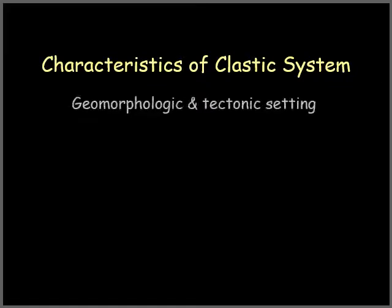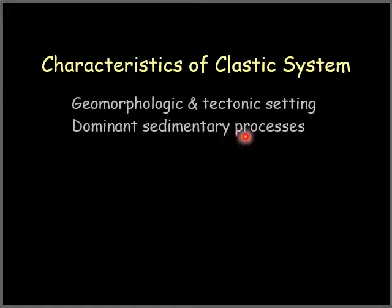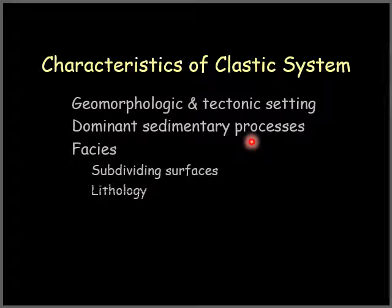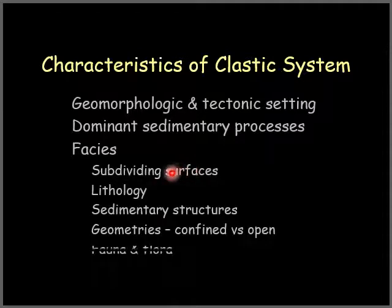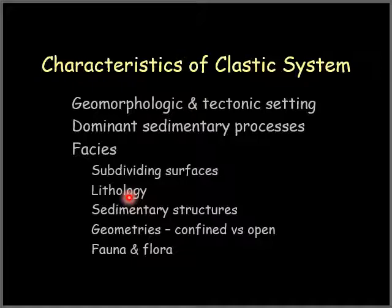Characteristics of clastic systems can be distinguished geomorphologically or depending on the tectonic setting. We will describe the different dominant sedimentary processes and facies. They are characterized by subdividing surfaces, which could be unconformities or disconformities, and they can be distinguished by the type of lithology, sedimentary structures, geometry — for example confined versus open — and they have their own distinguishing fauna and flora.